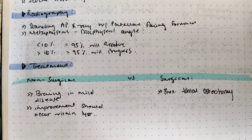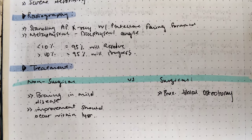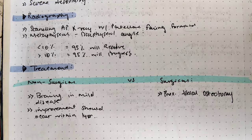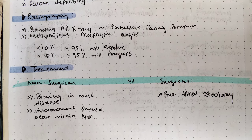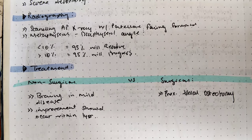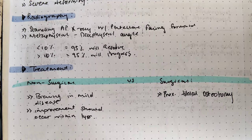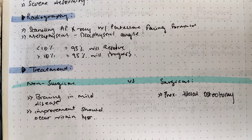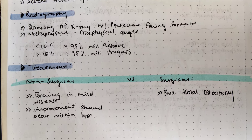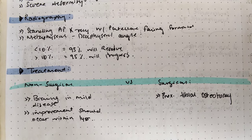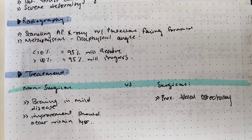Under treatment, options can be either non-surgical or surgical. Non-surgical, also known as conservative treatment of Blount's disease, would include bracing in mild disease, and there should be improvement within one year after starting treatment. If this treatment fails, that is an indication for surgical treatment. Surgical treatment of Blount's disease would be proximal tibial osteotomy.